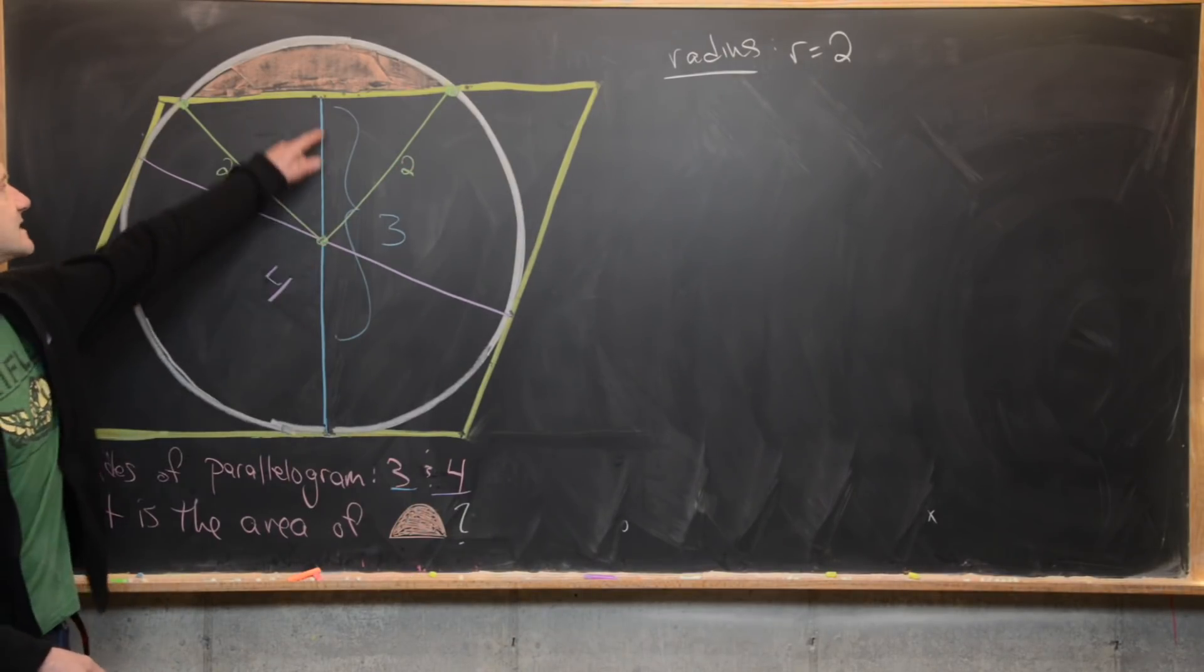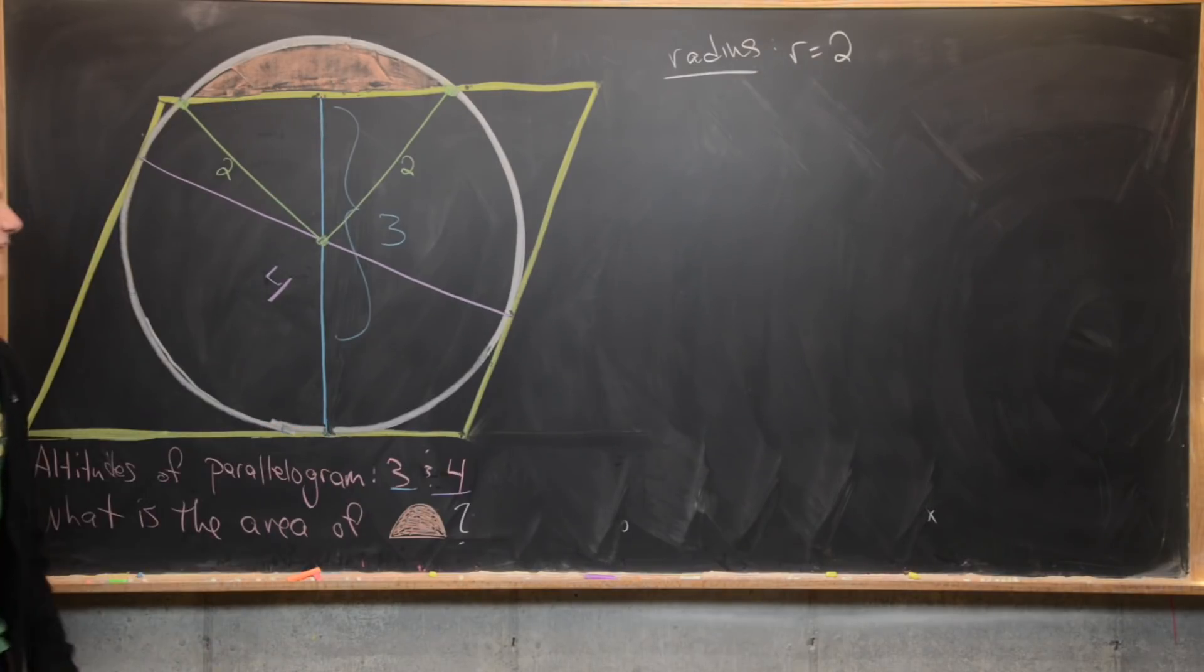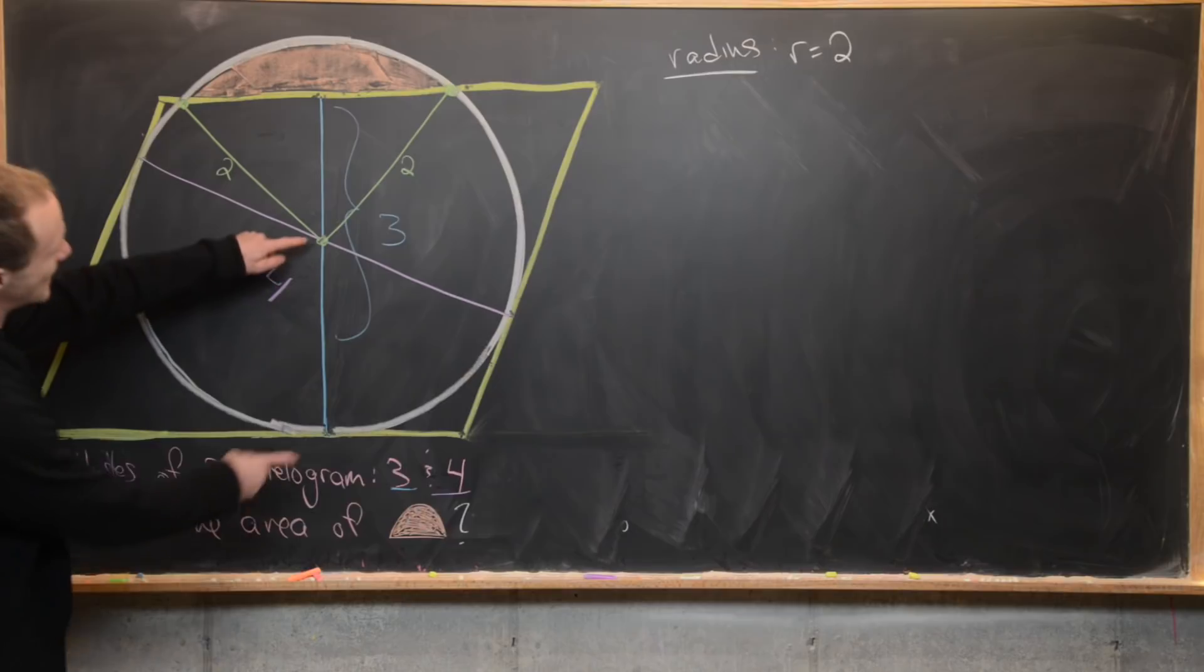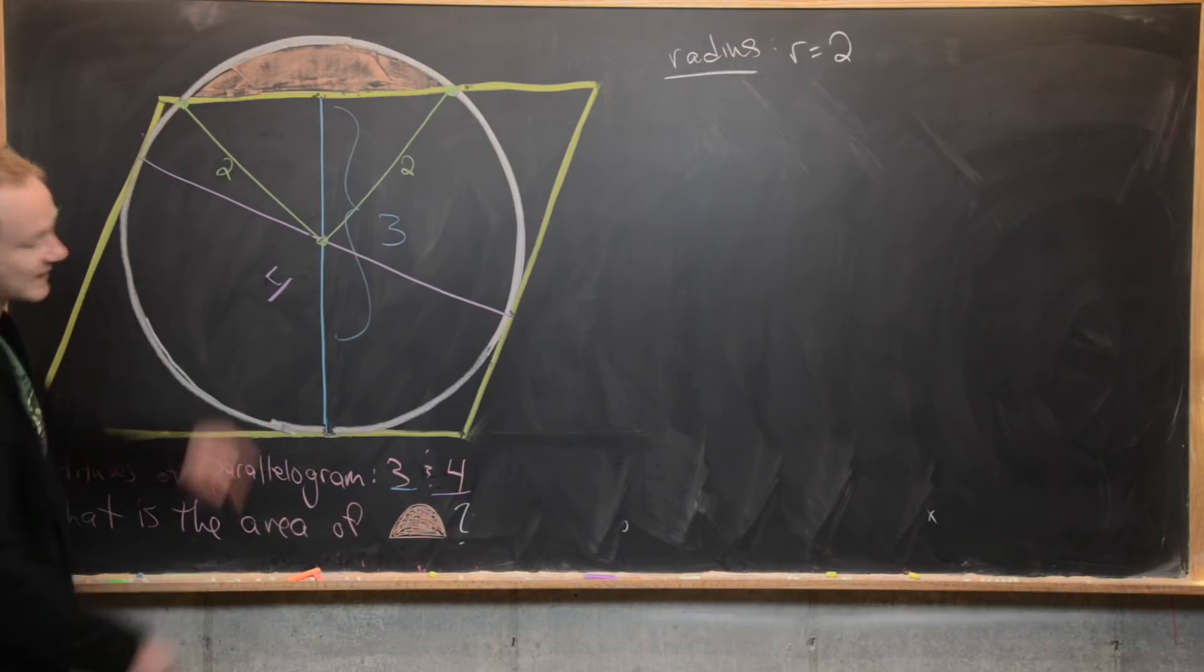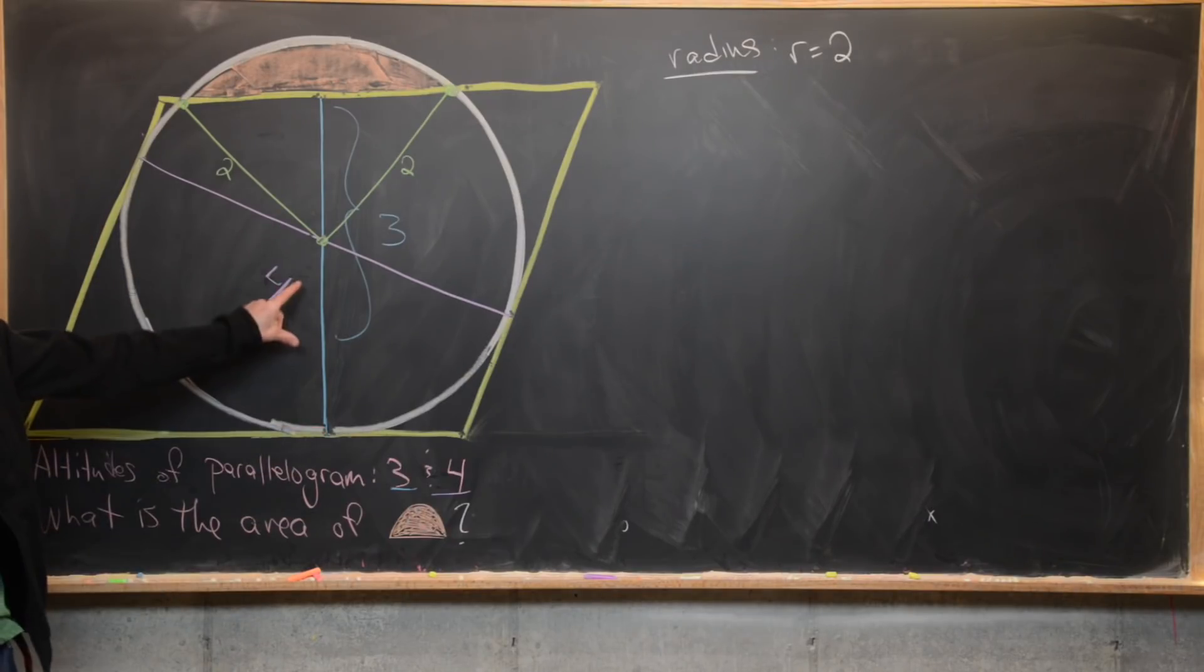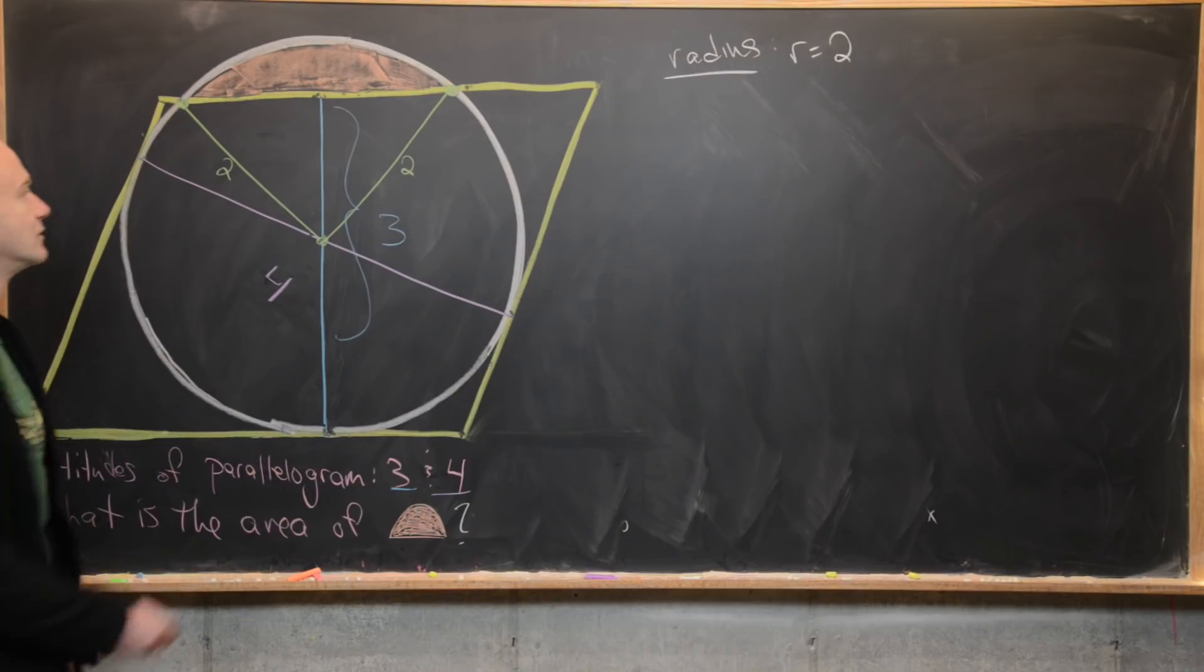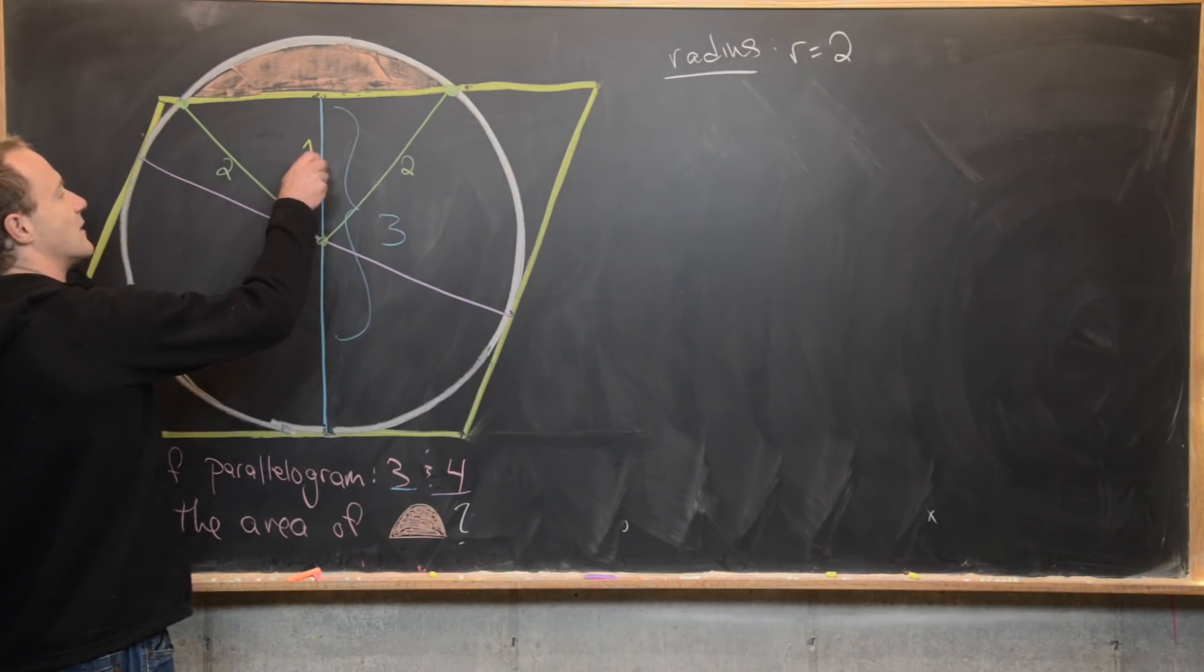So now let's talk about this length right here. We know the total length of the blue line segment is three, but this portion of that length is also a radius of the circle. So this length down here is two, making this remaining length up here one.